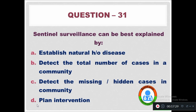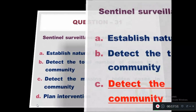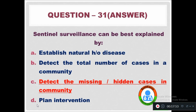Question 31: Sentinel surveillance can be best explained by — Option A: Establish natural history of disease. Option B: Detect the total number of cases in a community. Option C: Detect the missing hidden cases in the community. Option D: Plan intervention. The right answer is: detect the missing hidden cases in the community.